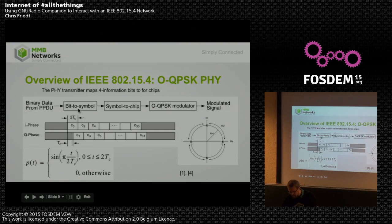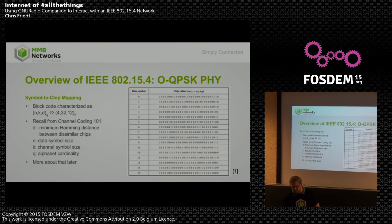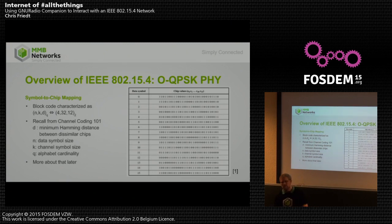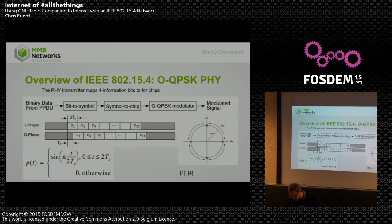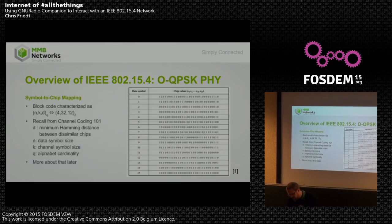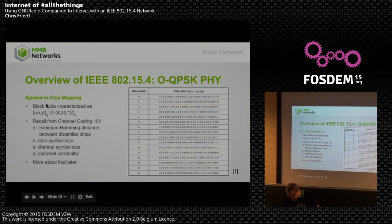The symbol-to-chip converter takes four bits and turns them into a series of 32 chips. The even chips become the I (in-phase) portion, and the odd chips become the Q. For block coding, the parameters are N, K, D — where D is the minimum Hamming distance between similar chips.